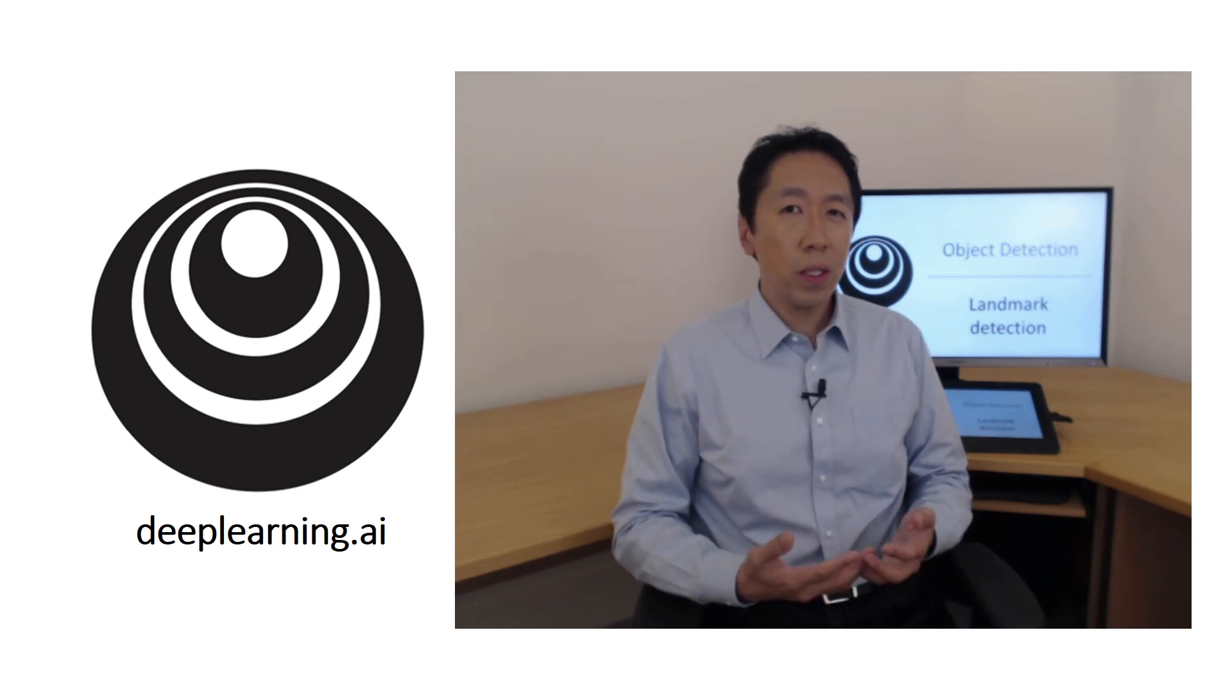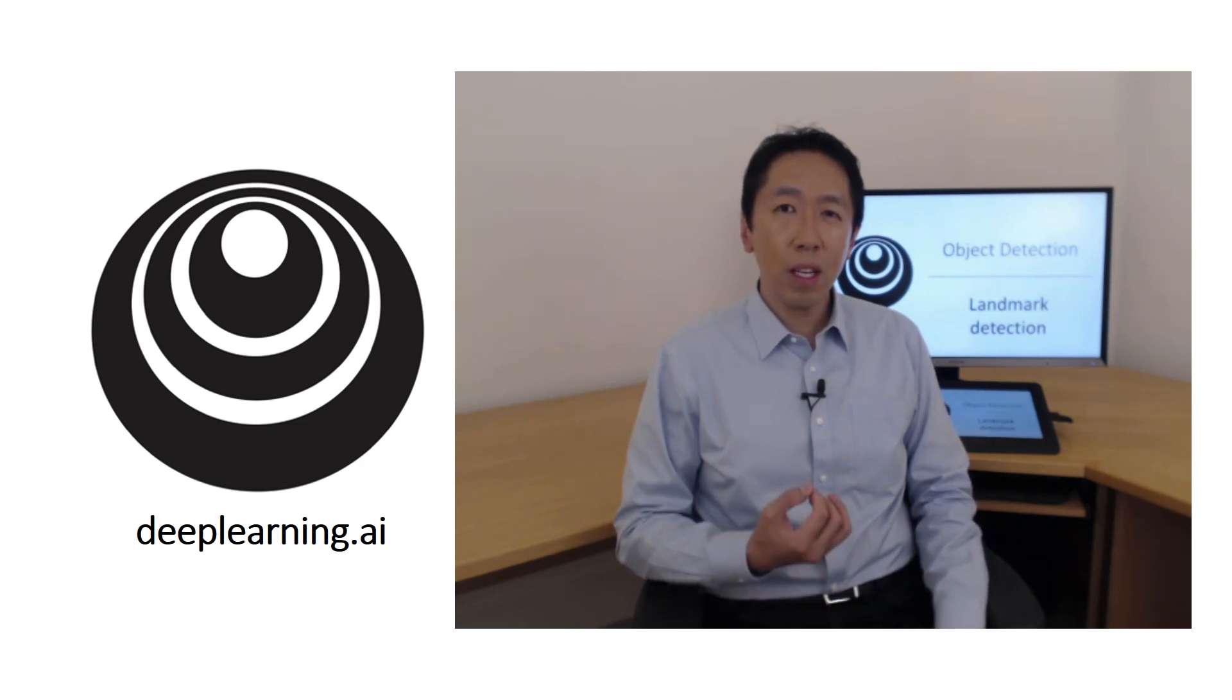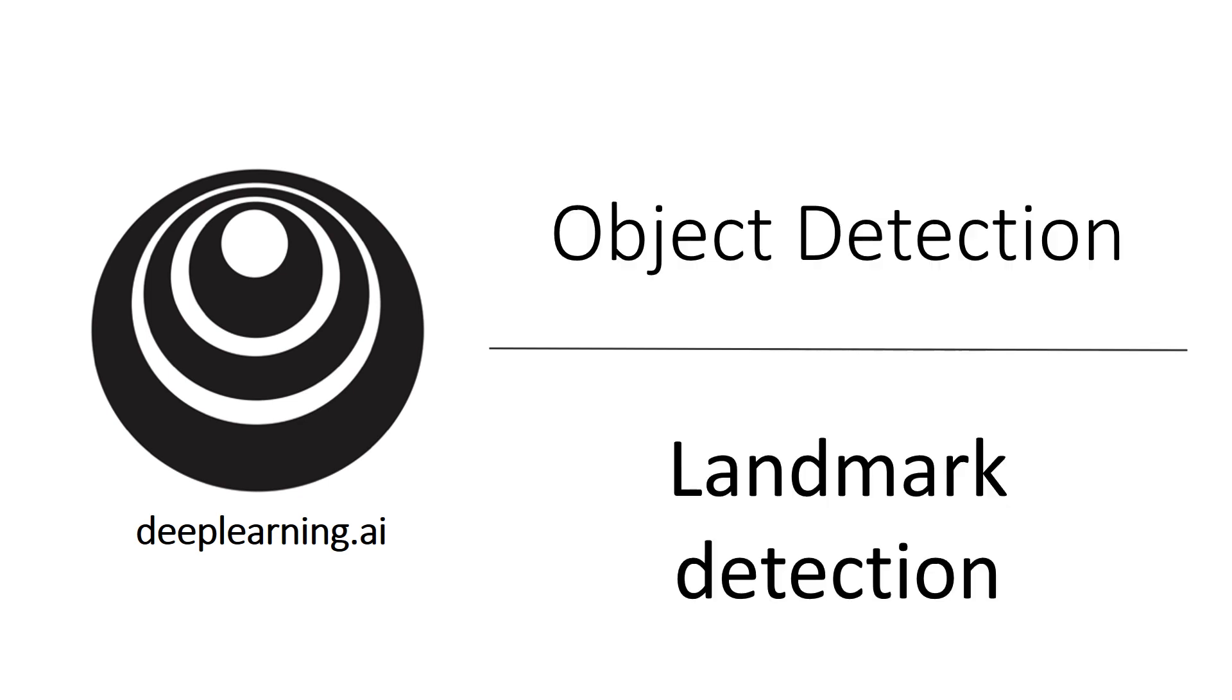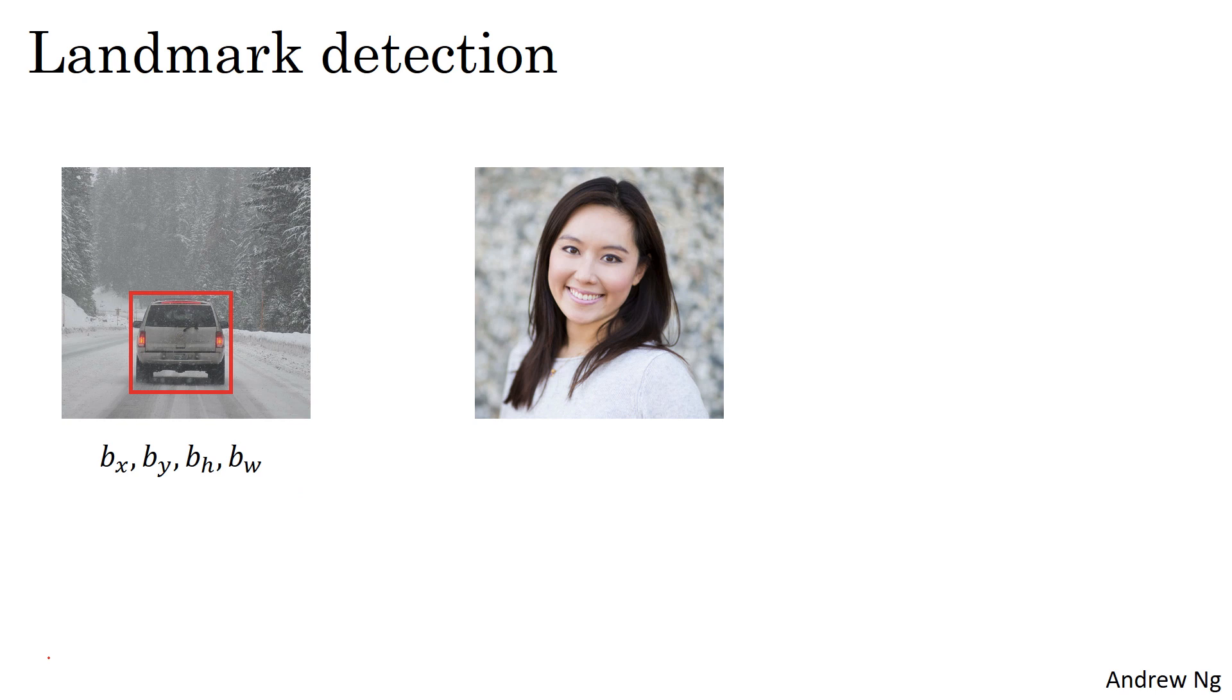In more general cases, you can have a neural network just output x and y coordinates of important points in an image, sometimes called landmarks that you want the neural network to recognize. Let's say you're building a face recognition application and you want the algorithm to tell you where is the corner of someone's eye. That point has an x and y coordinate. So you can have a neural network have this final layer and output two more numbers, which I'm going to call LX and LY, to tell you the coordinates of that corner of the person's eye.